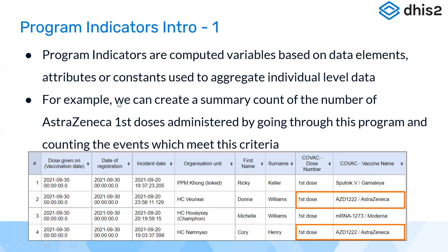For example, we can create a summary count of the number of AstraZeneca first doses administered by going through the program and counting events which meet that criteria. In this table we have a column for dose number and a column for vaccine name. Even using the line list we can count using a filter, but if we want a single value, we can use a program indicator to get a calculation of people who received AstraZeneca vaccine for the first dose. This calculation happens automatically without us having to do anything like we did yesterday using the event report.